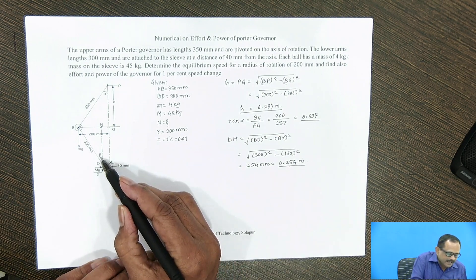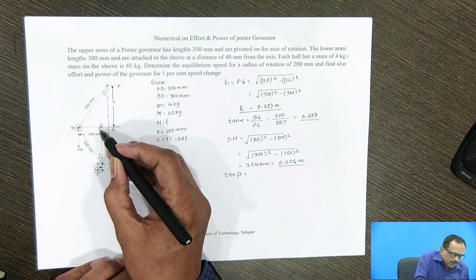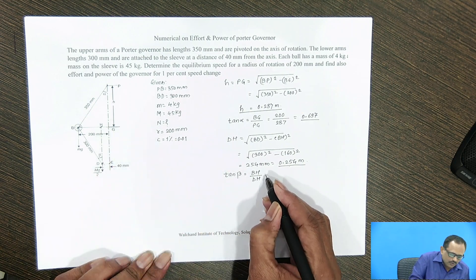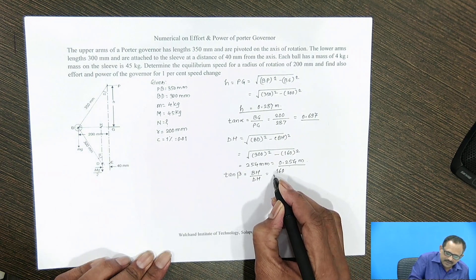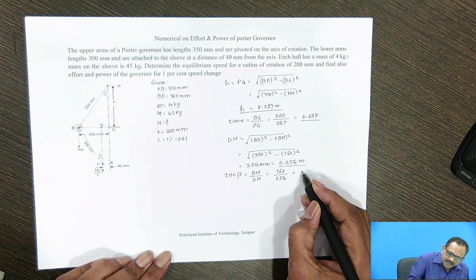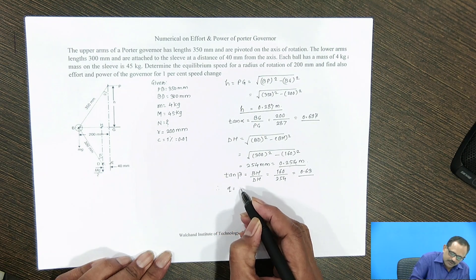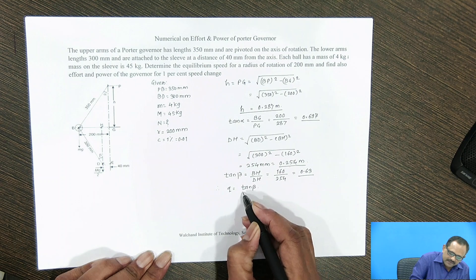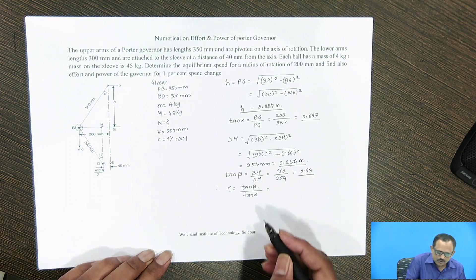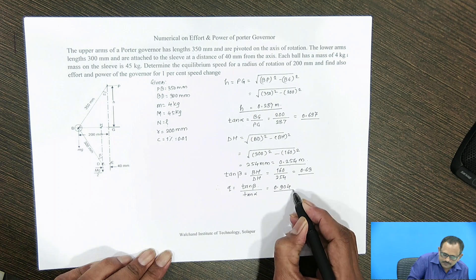Next, we calculate the angle of inclination beta. Tan beta equals the opposite side BH divided by the adjacent side DH. BH is 160 mm and DH is 254 mm, giving tan beta equal to 0.63. Then, q is the ratio of tan beta divided by tan alpha. Putting in the calculated values, q equals 0.904.